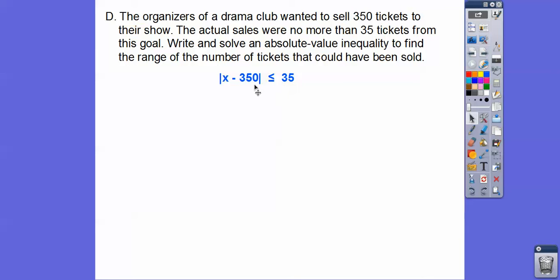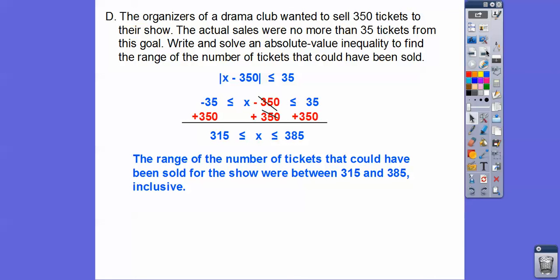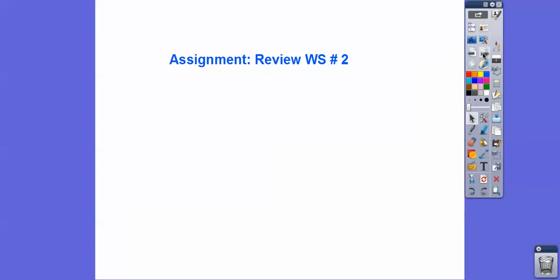So we do, this is an and statement, so we do negative 35, less than or equal to that, less than or equal to positive 35, and then, I'm sorry, 350. Then add 350 to both sides, and then let's answer the question. So the range of number of tickets that could have been sold for the show were somewhere between 315 to 385, and inclusively means it could be 315 and it could be 385. We're including those numbers right there. You guys, if you're in our class, you will be getting that. Take care.